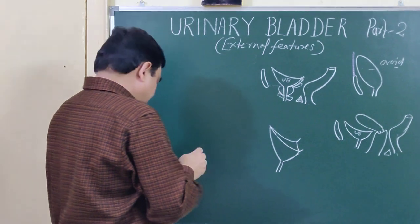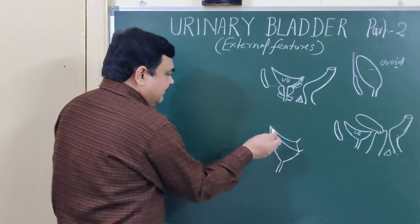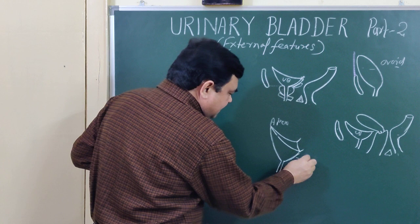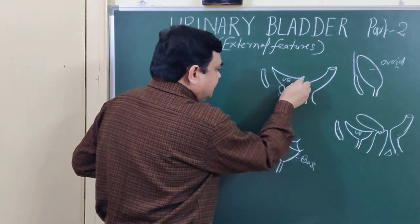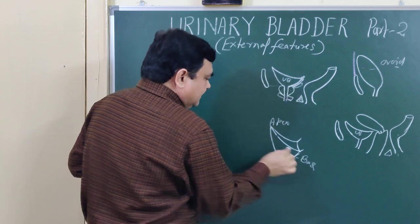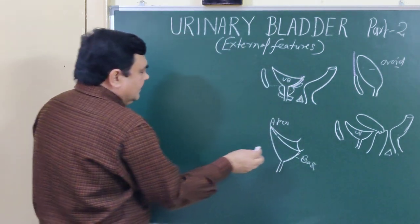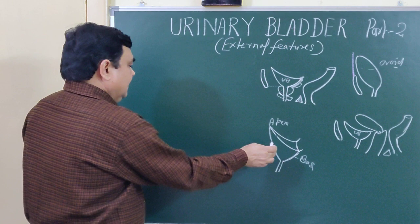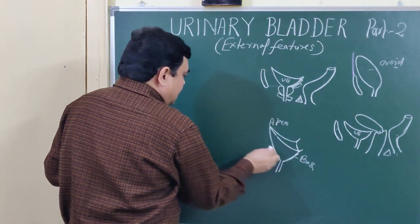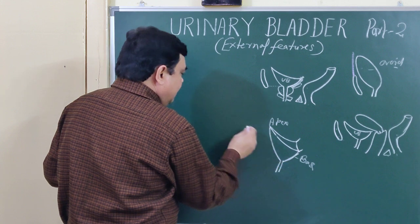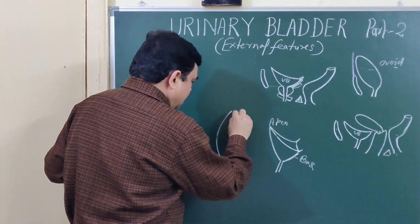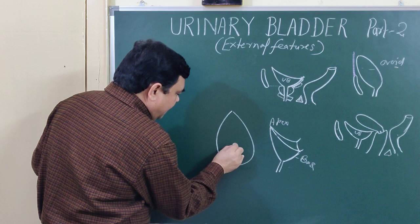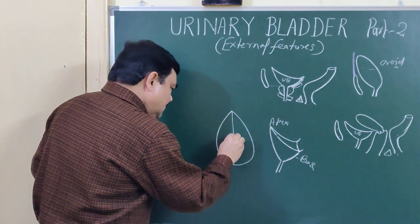The empty urinary bladder is tetrahedral in shape. It has an apex and a base. It has three surfaces and four borders. Viewing from the inferior side, you can identify the neck of the urinary bladder.